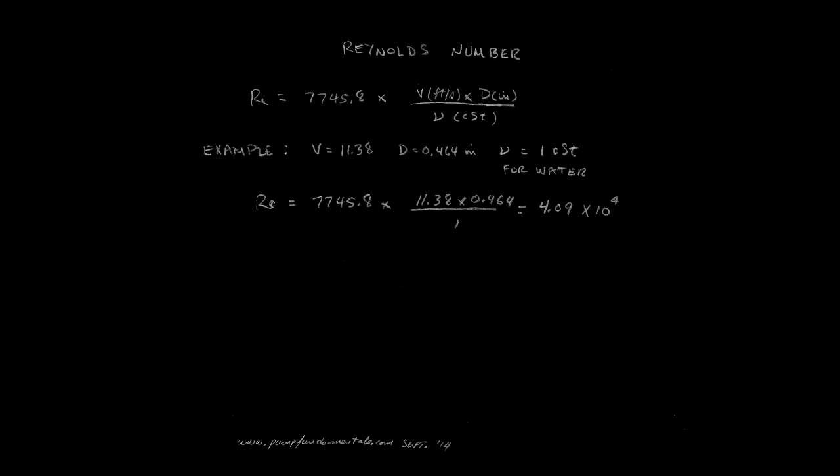The Reynolds number is a ratio of the forces related to inertia and viscosity. A large Reynolds number means that the velocity is high and the viscosity is low. A low Reynolds number means the inverse. The range of Reynolds numbers is so great that it has to be shown on a logarithmic scale, such as in the Moody diagram.